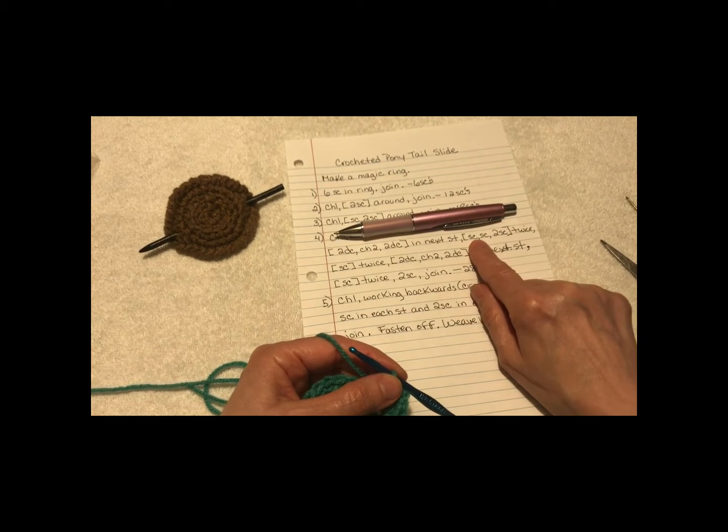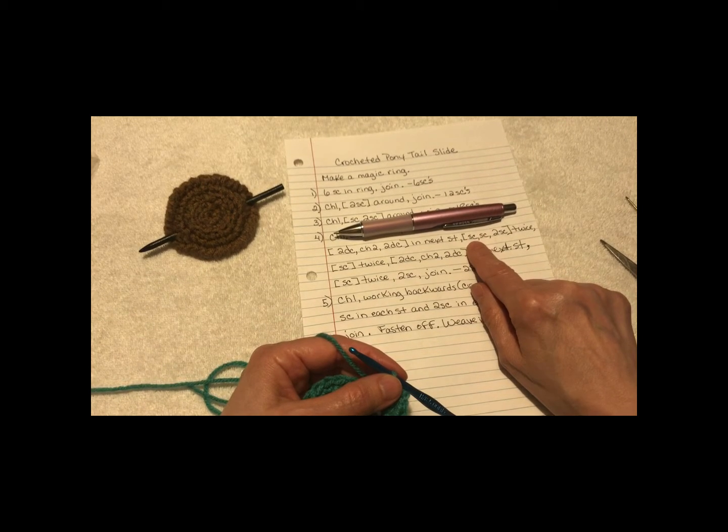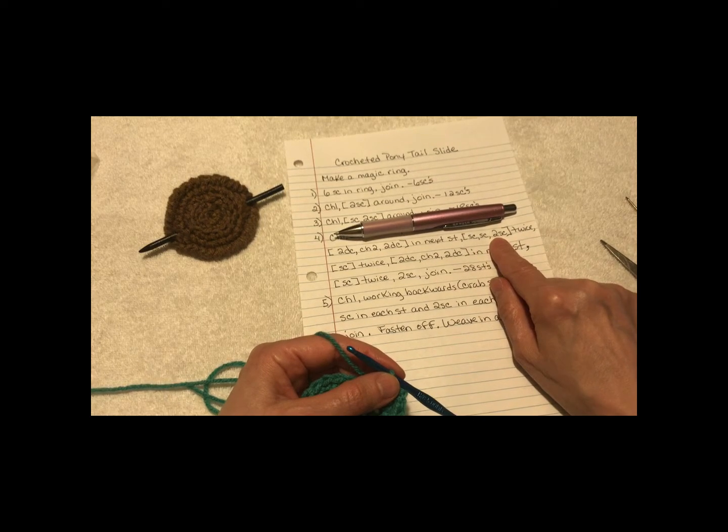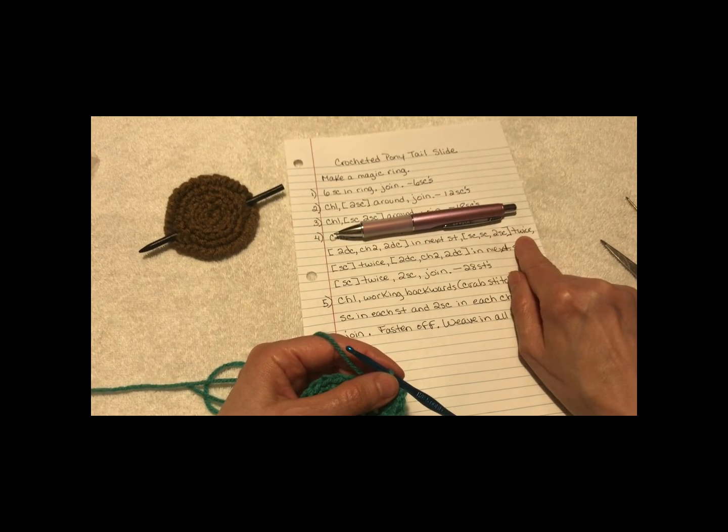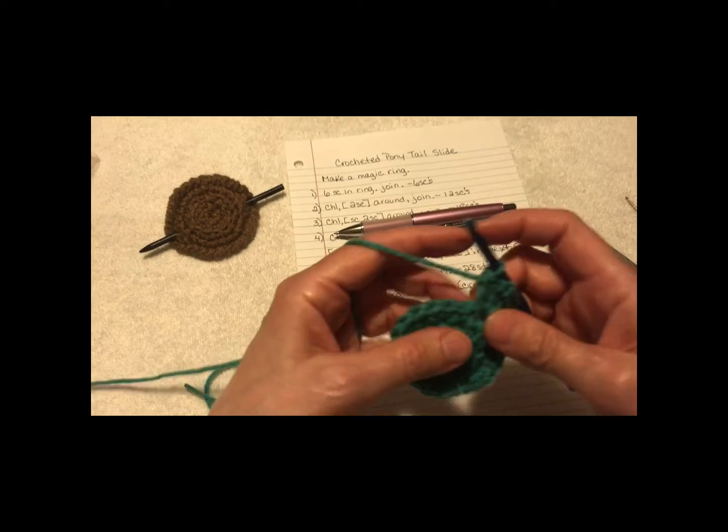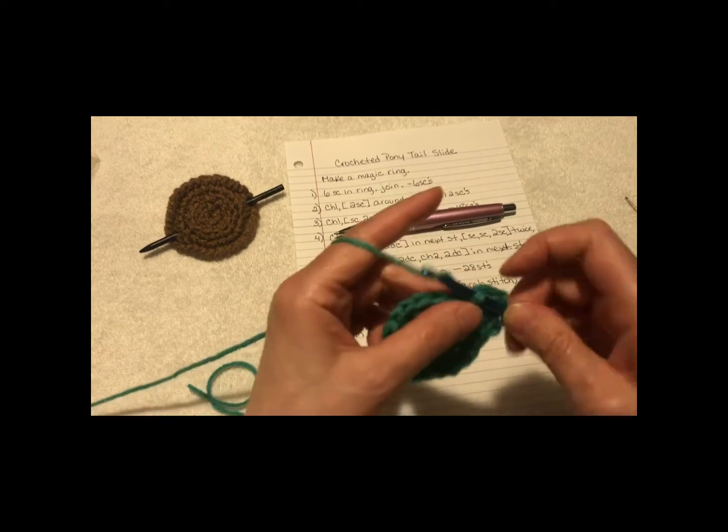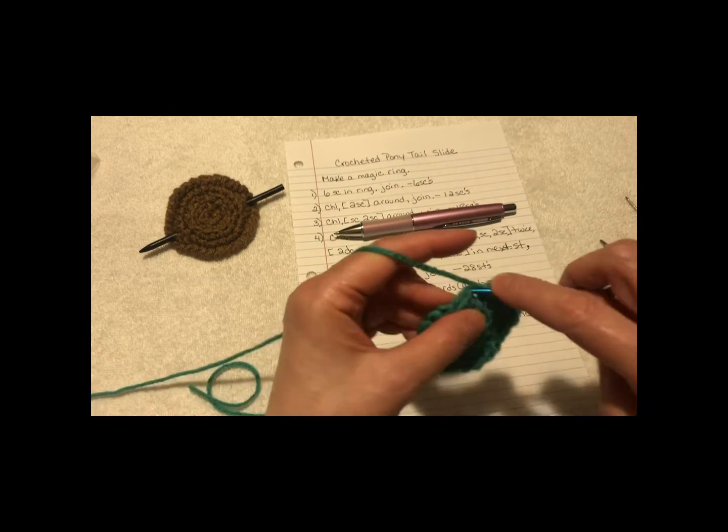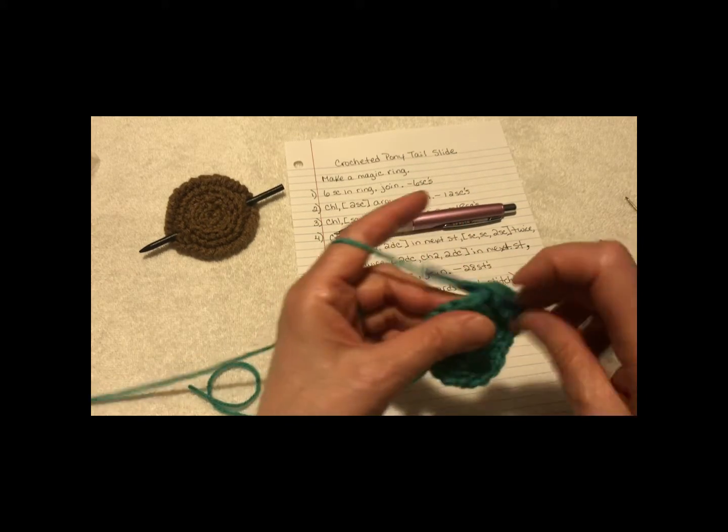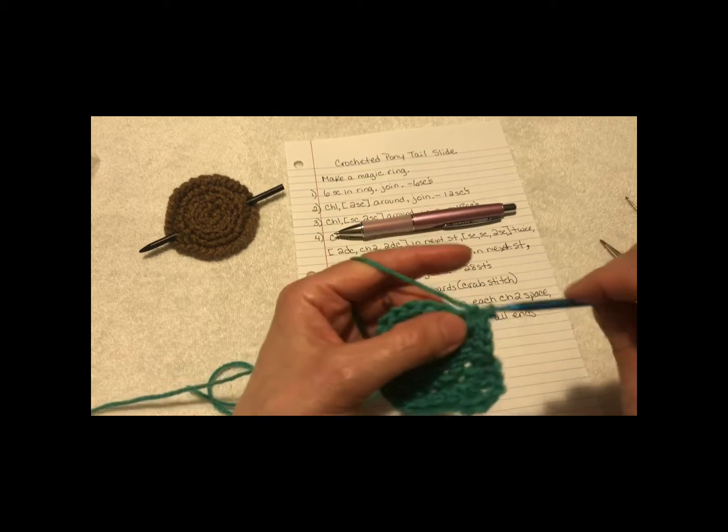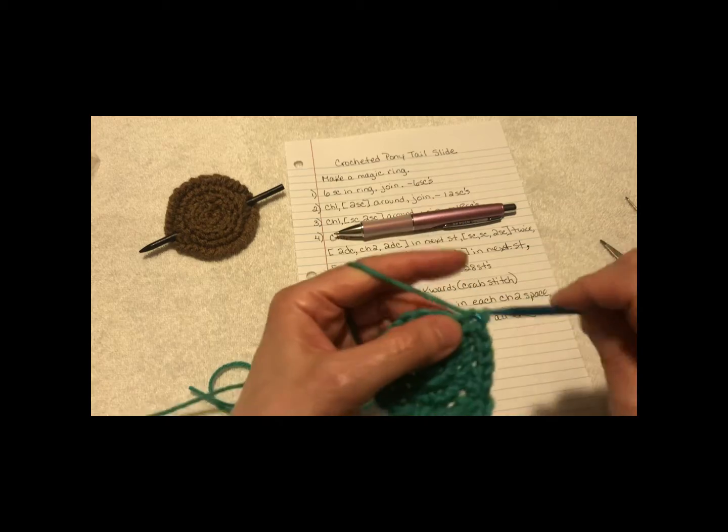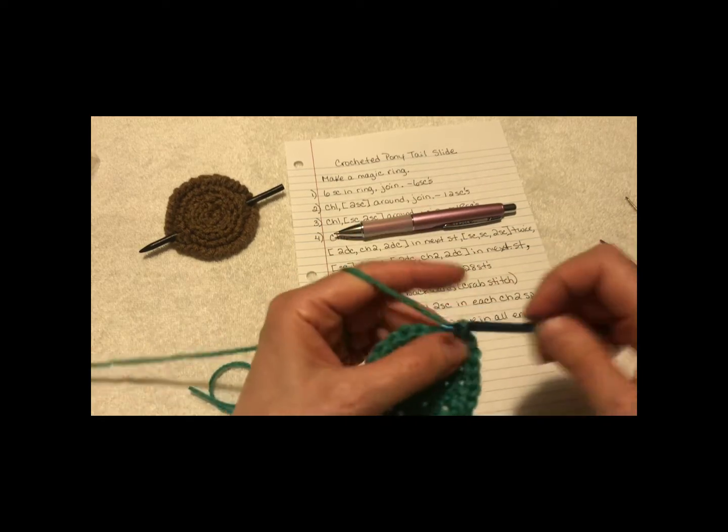And then what you're going to do is, in the next stitch, single crochet, next stitch, single crochet, next stitch, two single crochets, and you're going to do that twice. Single, next stitch, single, next stitch, two of them in the same stitch, next stitch, single, next stitch, single, next stitch, two in that same stitch.